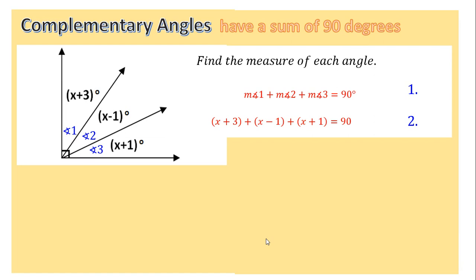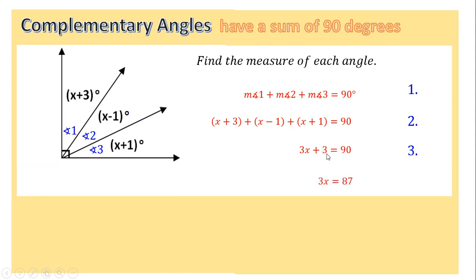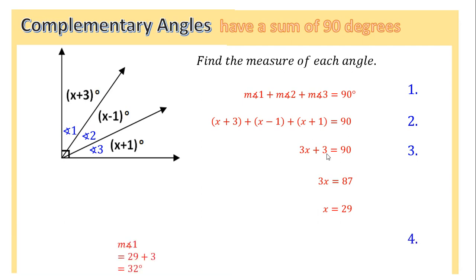Combine like terms: x plus x plus x gives 3x. Then positive 3, minus 1, and positive 1 — the negative 1 and positive 1 cancel, leaving plus 3. So 3x plus 3 equals 90. Subtract 3 and divide by 3 to get x equals 29. Substituting back: angle 1 is 29 plus 3 equals 32, angle 2 is 29 minus 1 equals 28, angle 3 is 29 plus 1 equals 30. These add up to 90.